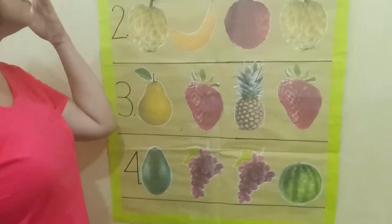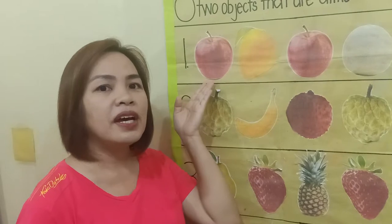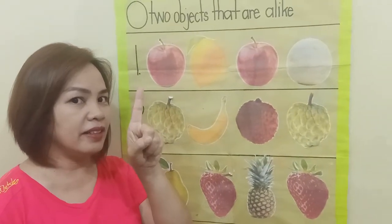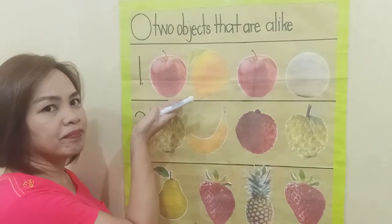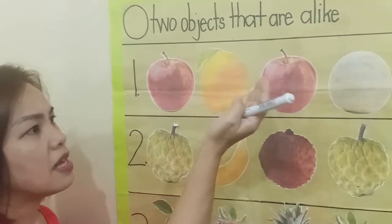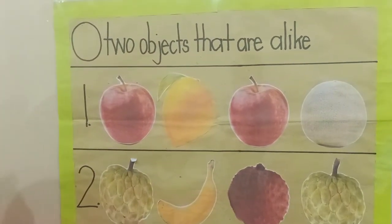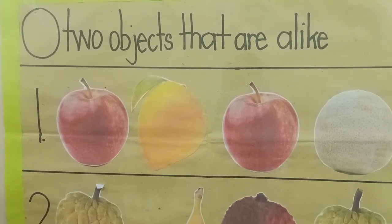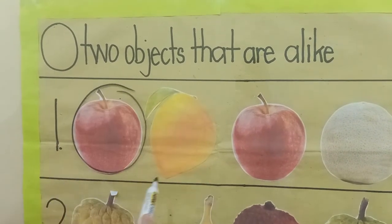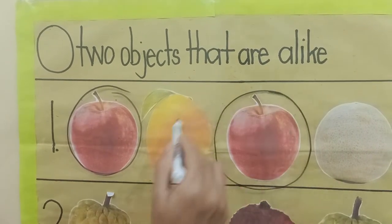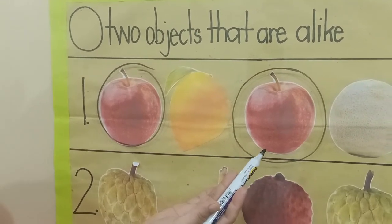Then, from top to bottom. So we will start with number one. Let us name the pictures: apple, mango, apple, melon. Which objects are alike? Yes, we have apple and another apple. These are alike.